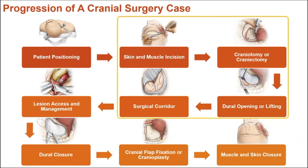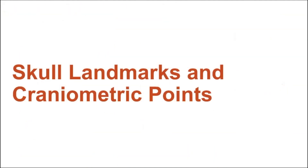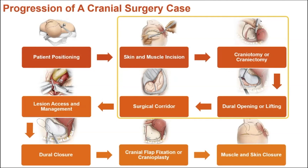In the most general sense, cranial cases follow a fairly standard linear progression: beginning with patient positioning, followed by skin and muscle incision, bur hole placement, bone flap fashioning, opening of the dura, establishing and navigating the surgical corridor, accessing the lesion, and debulking, decompressing, or clipping. Once finished, closing the dura, fixing the bone flap in place, and closing the muscle and skin. So the approach is the technique used to reach the target of choice — be that a region, tumor, or aneurysm — and generally can be thought of as the opening craniotomy and corridor portion.